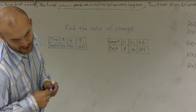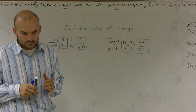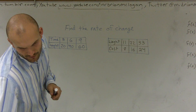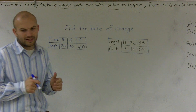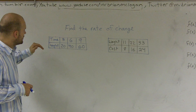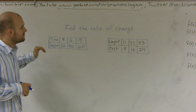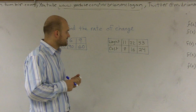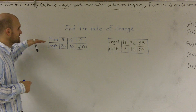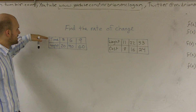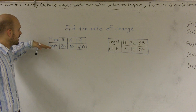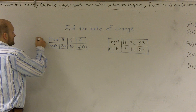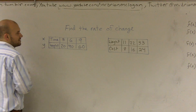A couple of things we need to look at: we're going to be looking at our change in y over our change in x. One thing we want to make sure we're doing is looking at what is going to be our independent and our dependent variable, and that is going to change your slope a little bit. Here, time is going to be my independent variable, and my height is going to depend on the time. So time is kind of like my x, and height is kind of like my y.